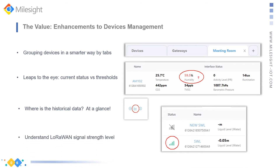And finally — how can I know the LoRaWAN signal strength? It's a very professional question; usually customers need proficiency to understand it. Now, based on our algorithm, customers can easily understand the exact LoRaWAN signal strength through this indicator icon, without any professional knowledge or using additional testing equipment. We divide the signal levels from level 1 to level 4 — you can get the details from the user manual on our website.